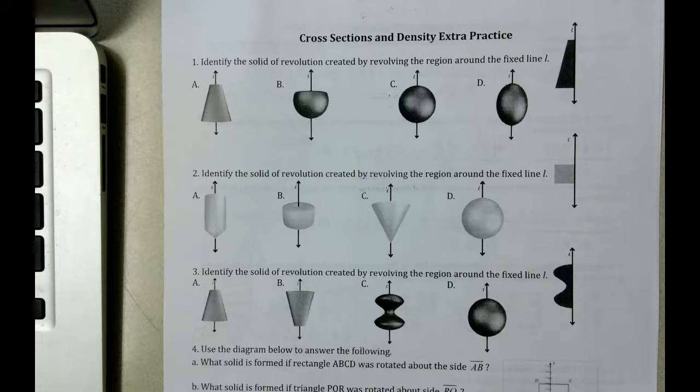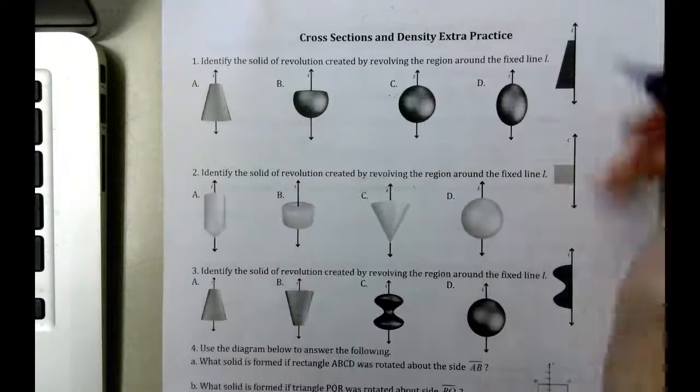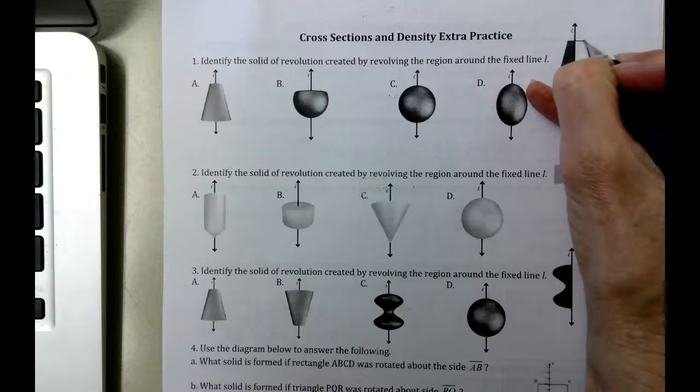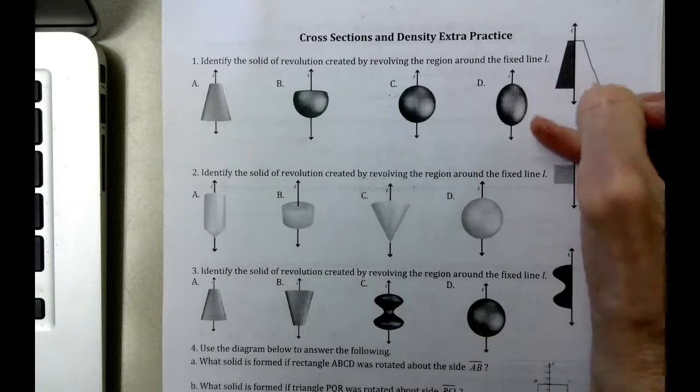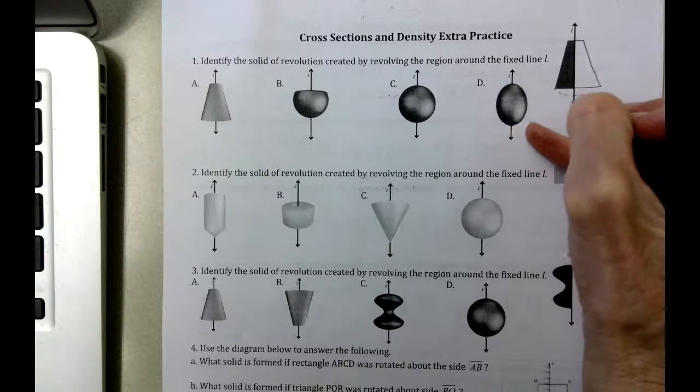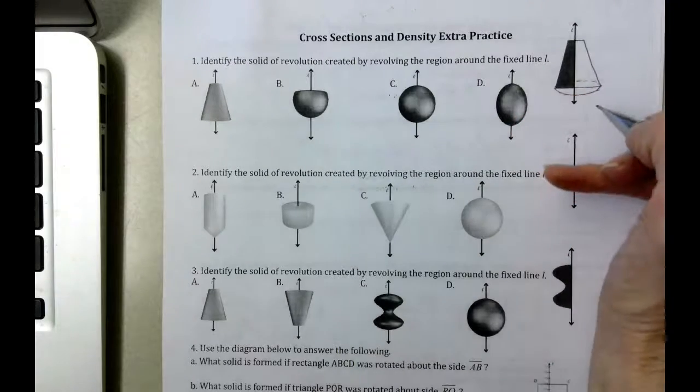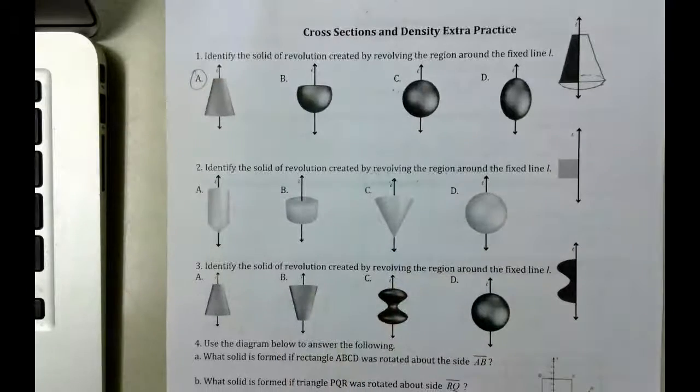Identify the solid of revolution created by revolving the region around the fixed line. So if we take this picture over here and we copy it to the other side, and then we can kind of add this here, and it's actually more this. It seems that our answer is going to be letter A.